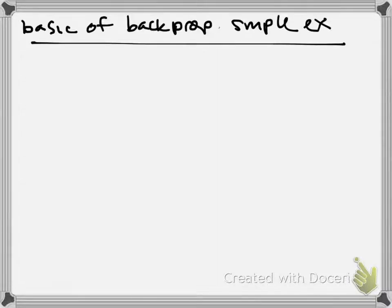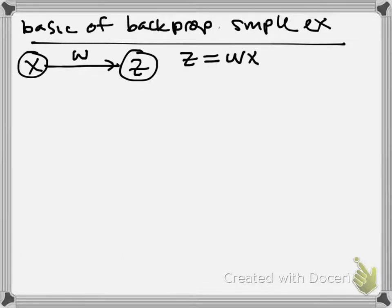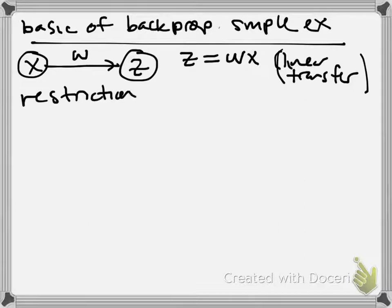So I said it was simple, and it is. Let's say we have some input, some weight, and some output z. So just a single layer perceptron, and let's say, moreover, that we take z to just be w times x. This is not typically what you want to do in a feedforward neural network, just a linear transfer function, but we're just going to do it so we can see how all this works.